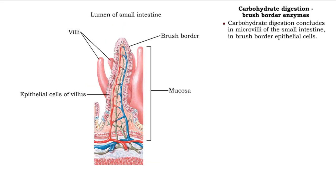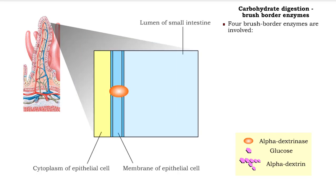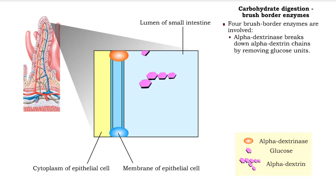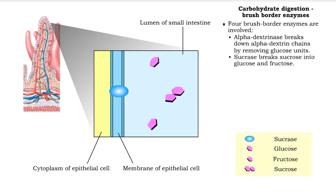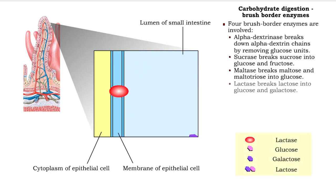Carbohydrate digestion of monosaccharides concludes in microvilli of the small intestine. Four brush border enzymes are involved. Alphadextrinase breaks down alphadextrins by clipping off one glucose unit at a time. Sucrase breaks sucrose into molecules of glucose and fructose. Maltase breaks maltose and maltotriose into two or three molecules of glucose respectively. Lactase breaks lactose into molecules of glucose and galactose.